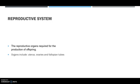The reproductive system. The reproductive organs are required for the production of offspring to bring new life. The organs include the uterus, the ovaries, and the fallopian tubes.